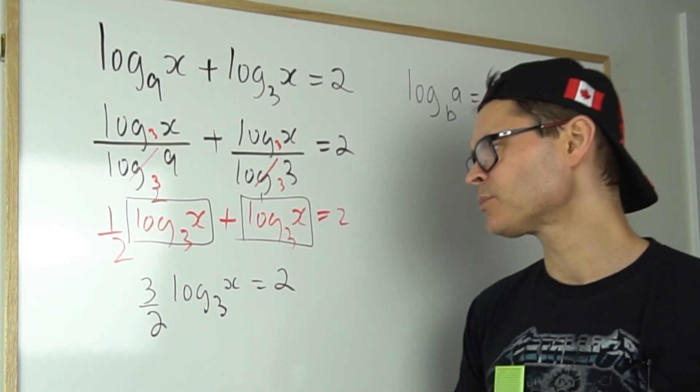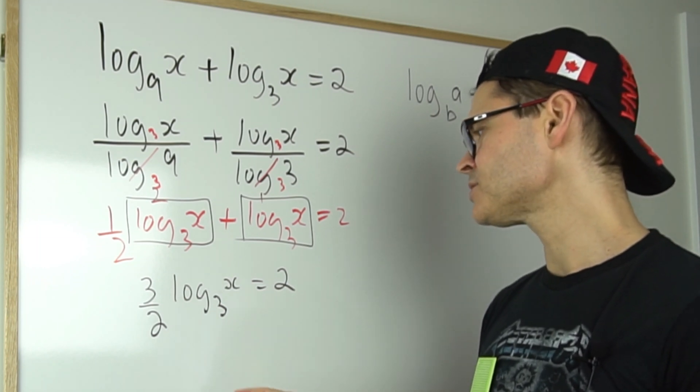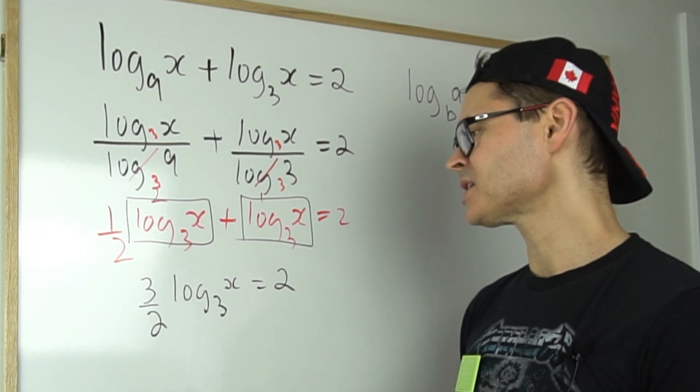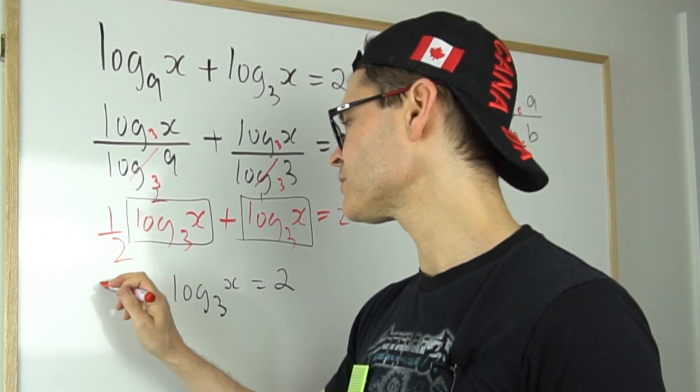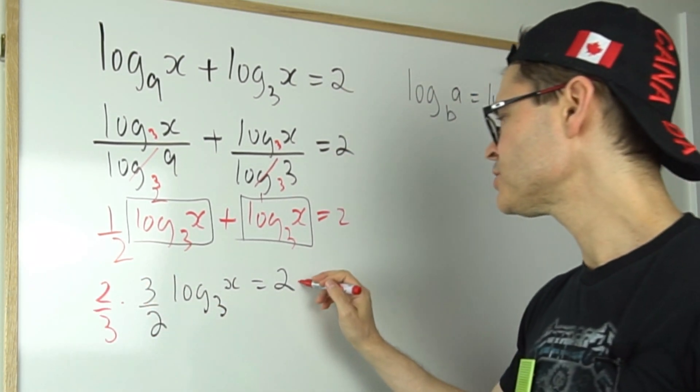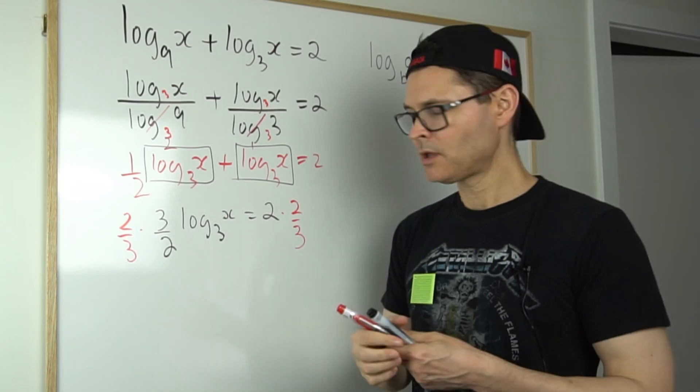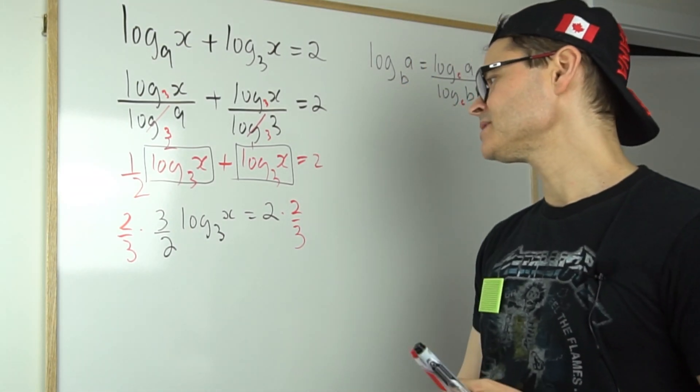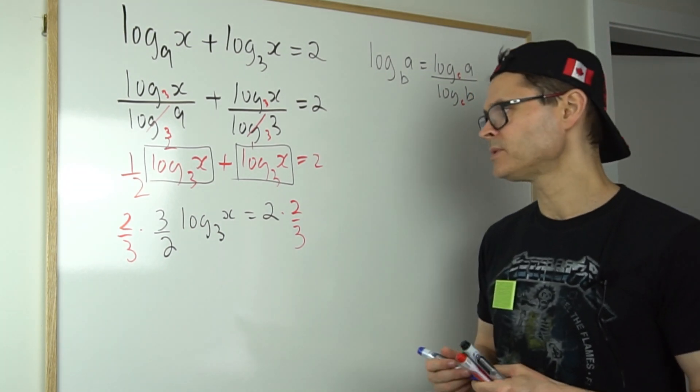And you can see we're pretty close to cracking this because what I could do now is, well I could just multiply both sides by two over three. So if I multiply by two over three by two over three, then it isolates the log and now I'm in a position to be able to simply rewrite it from log form to exponential.